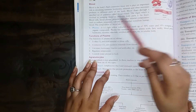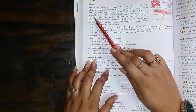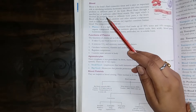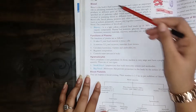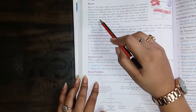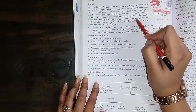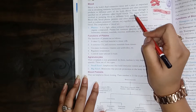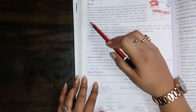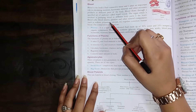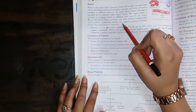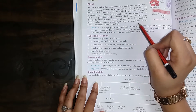Blood flows through specified pathways called blood vessels. It is pumped by the heart to different body parts. Blood is made up of blood cells, plasma, proteins and other mineral components such as sodium, potassium, calcium, etc., which together constitute human blood.